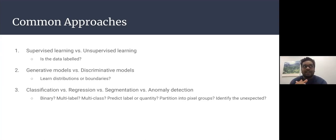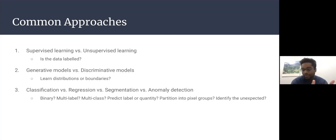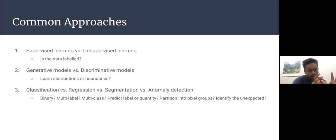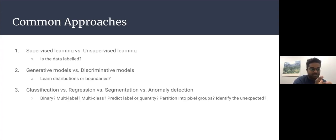For anomaly detection — which is often the case in healthcare — we usually have a lot of data with nothing anomalous about it. If only one percent of data had some kind of anomaly, training would be very imbalanced. Anomaly detection can be used to learn the healthy or non-anomalous distribution so that we can find the anomalous distribution later. Then there's binary classification versus multi-class classification, and multi-label classification, which applies when predicting multiple non-mutually-exclusive things within an image.